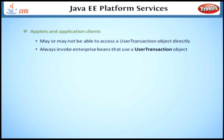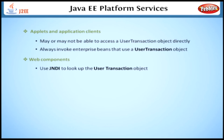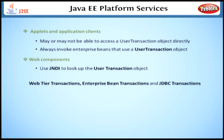The final component is web components. They use JNDI to look up the user transaction object. What we have discussed here is the basics of transactions, their characteristics, and accessing the transaction objects. Later in the course, we will analyze in detail the web tier transactions, enterprise bean transactions, and JDBC transactions.